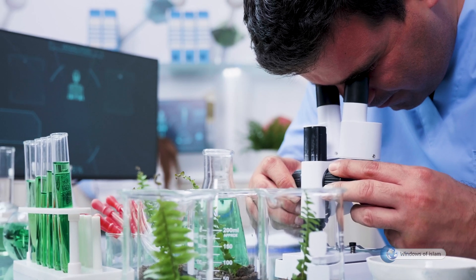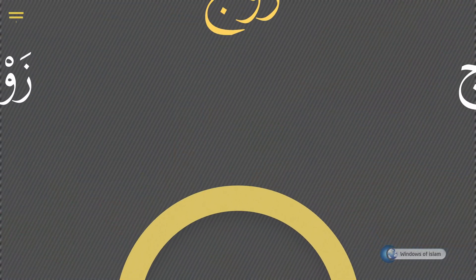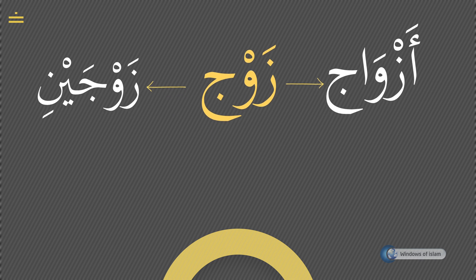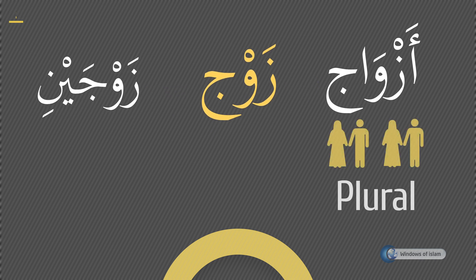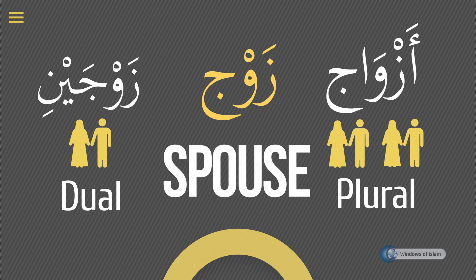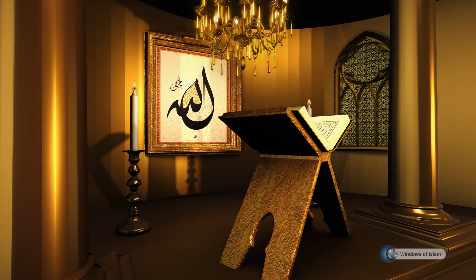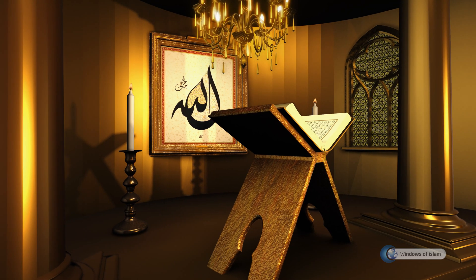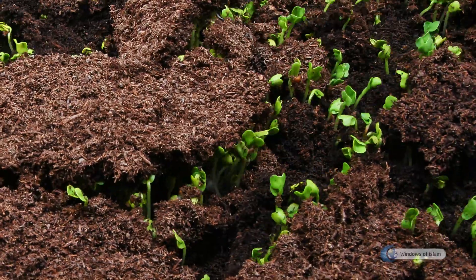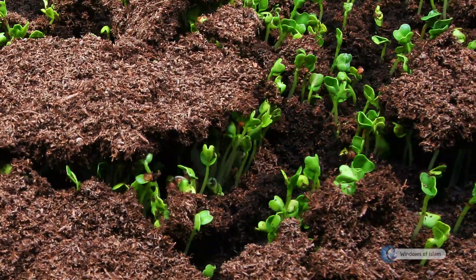It is as follows. The root of the words ezwach and zojini used in the verses is the word zoj. While the word ezwach is the plural form of zoj, the word zojini is the dual form of zoj, and zoj means spouse. We understand from these explanations that the Quran states through its verses that the plants are created in pairs and there is masculinity and femininity in plants, too.